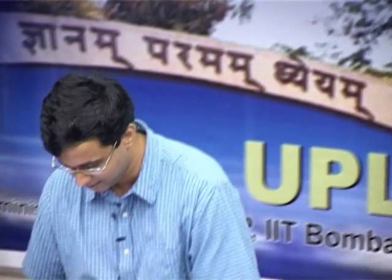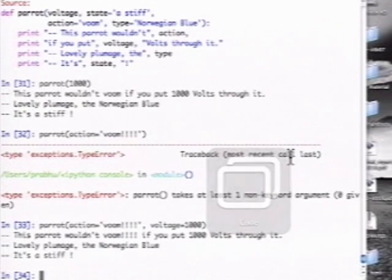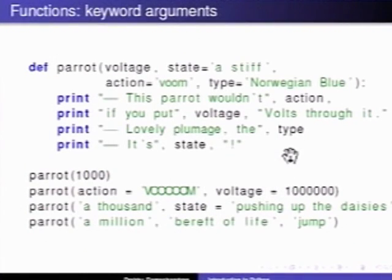I can say action='VOOM!!!'. Notice there is a problem — the first argument I have not specified. If I just called it like this, it is an error: parrot takes at least one non-keyword argument, 0 given. But if I explicitly call it with voltage by keyword argument, type by keyword, and action specified, that works — python knows what state is from its default, and everything else is specified.